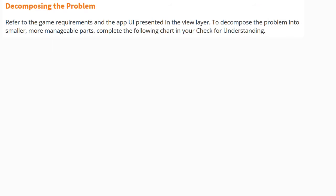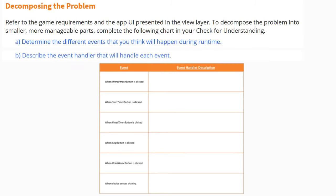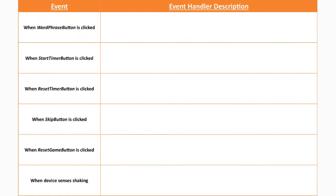It's now time to decompose the problem, or break it down into smaller steps. We will need to refer to the game requirements and the app UI presented in the view layer. To decompose the problem into smaller, more manageable parts, complete the following chart in your check for understanding. We will need to determine the different events that will happen during runtime, and also describe the event handler that will handle each event. Here is an example of what your event handler chart should look like. We are going to be focusing on six different types of event handlers.